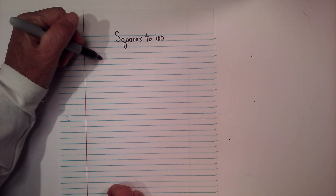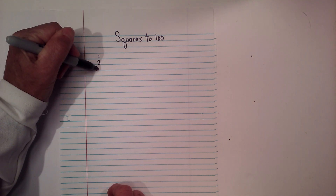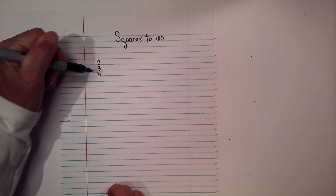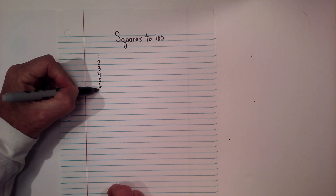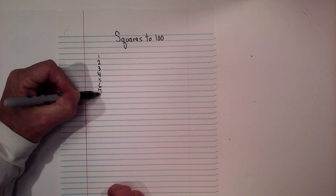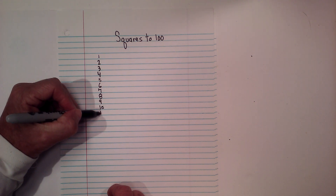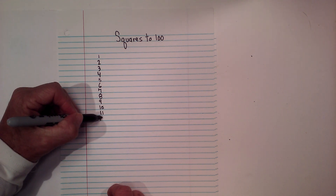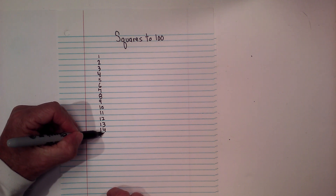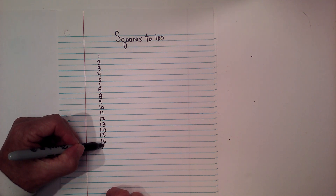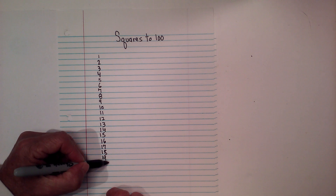So let's get started. I'm going to first number 1 through 20: 1, 2, 3, 4, 5, 6, 7, 8, 9, 10, 11, 12, 13, 14, 15, 16, 17, 18, 19, and 20.